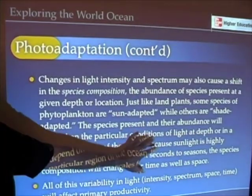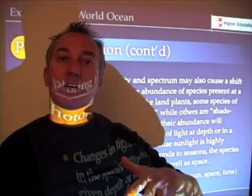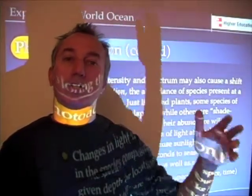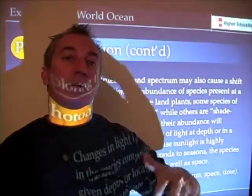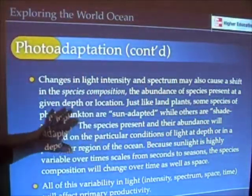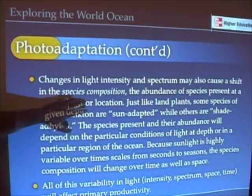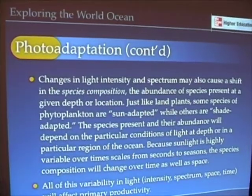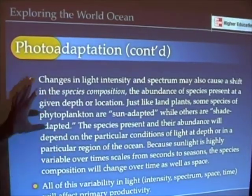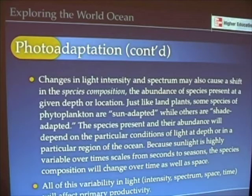These changes in sunlight happen every day. The availability of sunlight changes on seasonal and annual scales. So sunlight is governing not only the abundance, but also the kinds of species that we see. A lot of this is complicated and it takes years of studying this stuff to appreciate why it's important, but it's good to expose yourself to it.